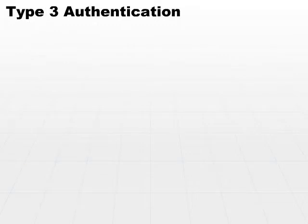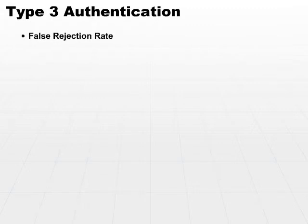Now, if biometrics are so good, what are some of the issues with it? First off, we have the false rejection rate, FRR. The false rejection rate is the rate at which a particular biometric would reject a valid subject.